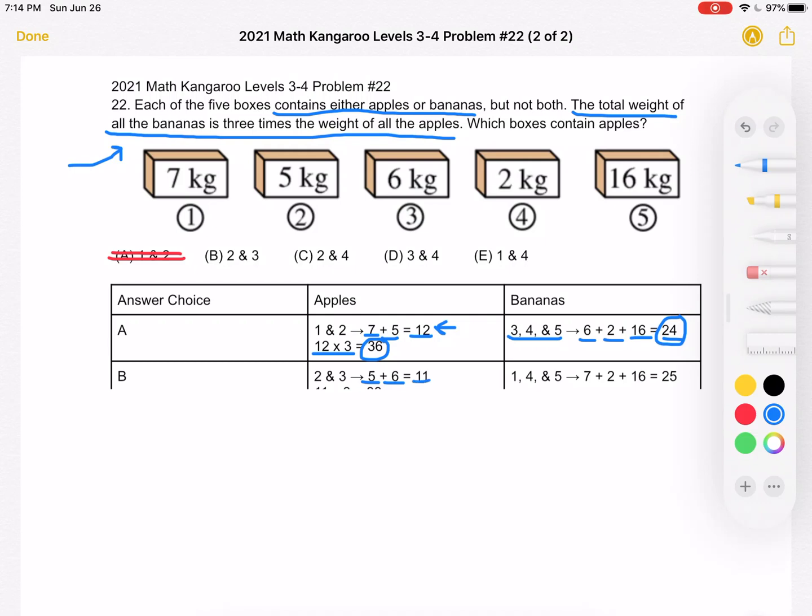And again, the rest of the boxes would contain bananas. That's 1, 4, and 5. We would have 7 plus 2 plus 16, total of 25. So we have 25 bananas, 11 apples. 11 times 3 is equal to 33. 33 is not equal to 25, so answer choice B is also incorrect.